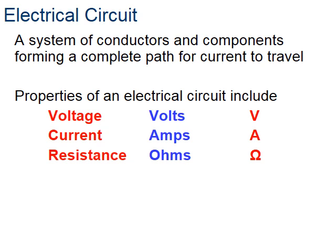Ohm's law speaks to electrical circuits. A circuit is really just a system of different components that make a complete path for electrical current to travel. When we talk about electrical circuits, there are three things that we really care about. One is voltage, which is measured by the units of volts and has the symbol V. The second thing is current, measured with amps, symbol A. And then finally, resistance is in ohms — that little horseshoe, which is actually the Greek symbol omega.